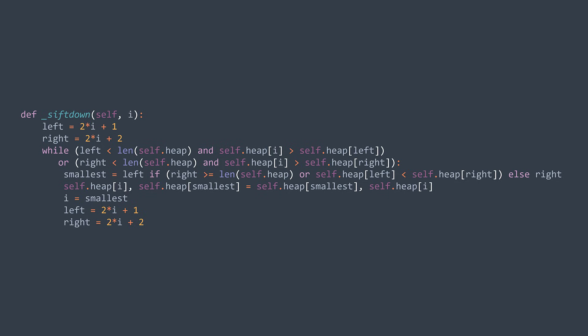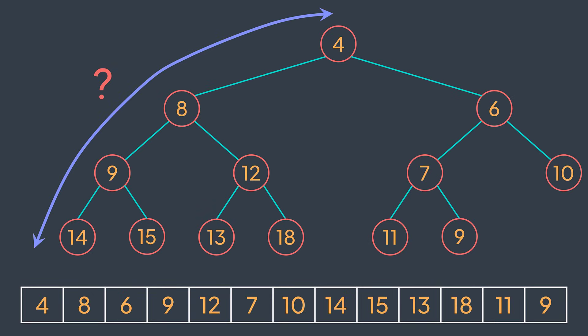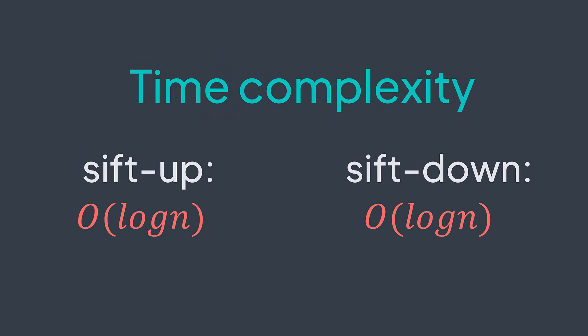In both sift operations, at each iteration the node moves by one level in the heap. So the number of iterations depends on the height of the heap. And because the binary heap is a complete tree, and a complete tree is always balanced, the height is O(log n) where n is the number of elements. So the time complexity of sift up and sift down is O(log n).